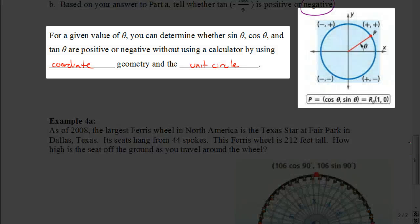Now, for any given value of our angle measurement, we can always tell whether the sine of the angle or the cosine of the angle and the tangent of the angle are positive or negative without using a calculator by using coordinate geometry in the unit circle. For example, over here on the right, remember that anything in quadrant 1, the x and y are both positive. Remember, with trigonometry, the x is the cosine of the angle and the y is the sine of the angle. So anything in quadrant 1, the cosine of the angle is going to be positive. The sine of the angle is also going to be positive.